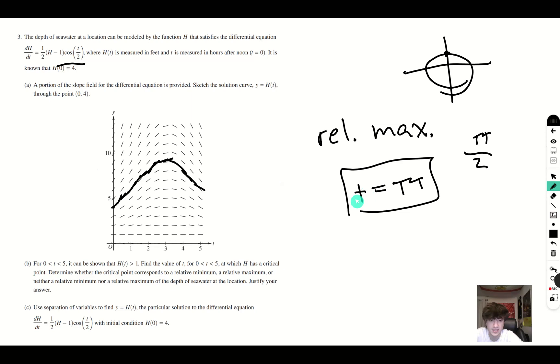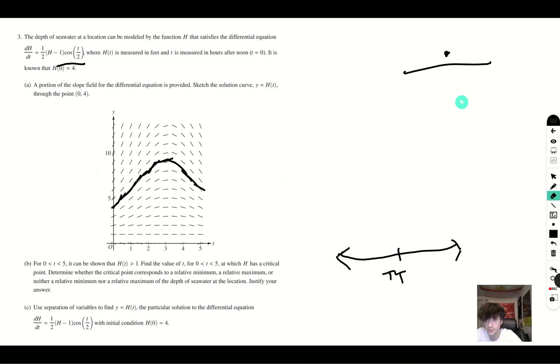At t equals pi, h prime of t is equal to zero. So now we make a number line. We have pi here, and we're going to see if h of t is going to be positive or negative on either side to determine if it's a relative minimum, relative maximum, or neither.